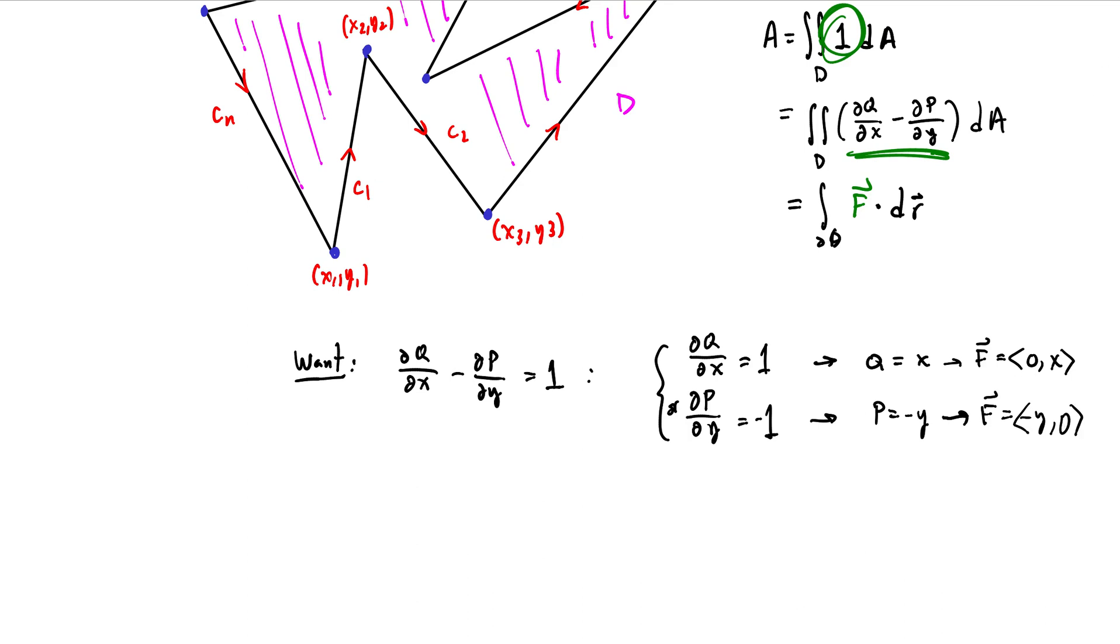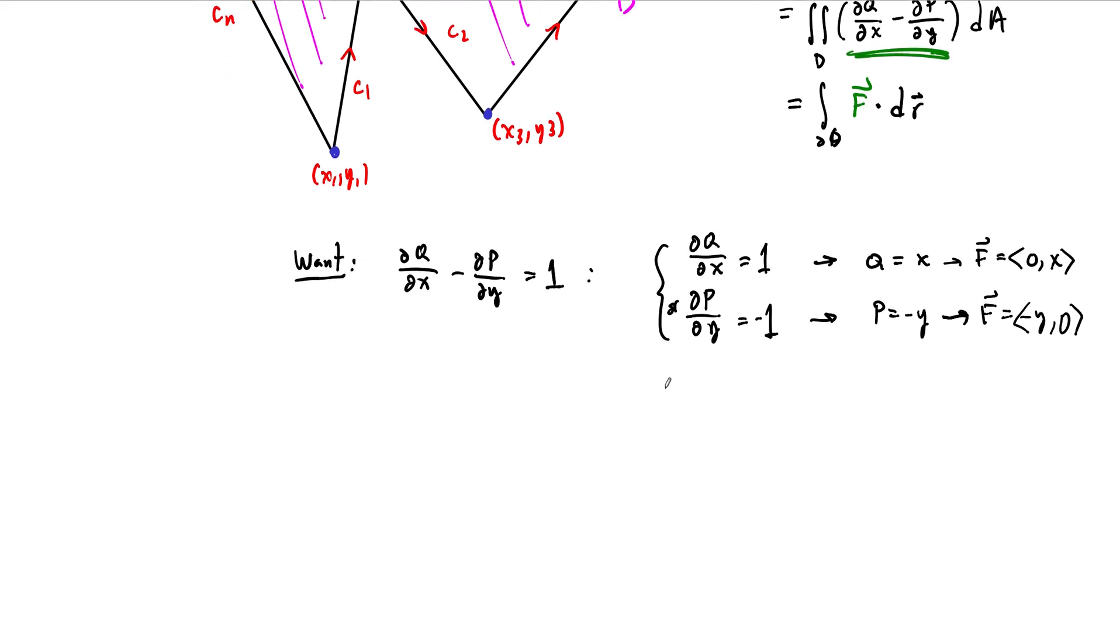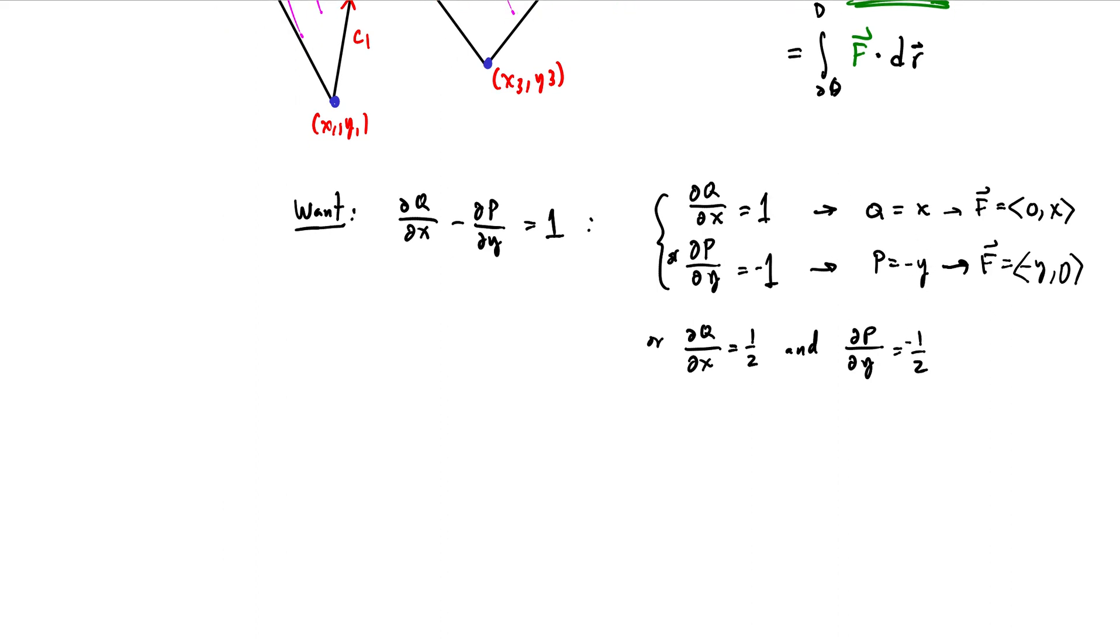We could also take an average of these two. Here's our third case. We could let ∂Q/∂x equal 1/2 and at the same time let ∂P/∂y equal -1/2. That adds up to 1 as well. If this is 1/2, this becomes x/2. This becomes -y/2. So the vector field that we can use to compute the area here is F = ⟨-y/2, x/2⟩. This is the one we're going to use.